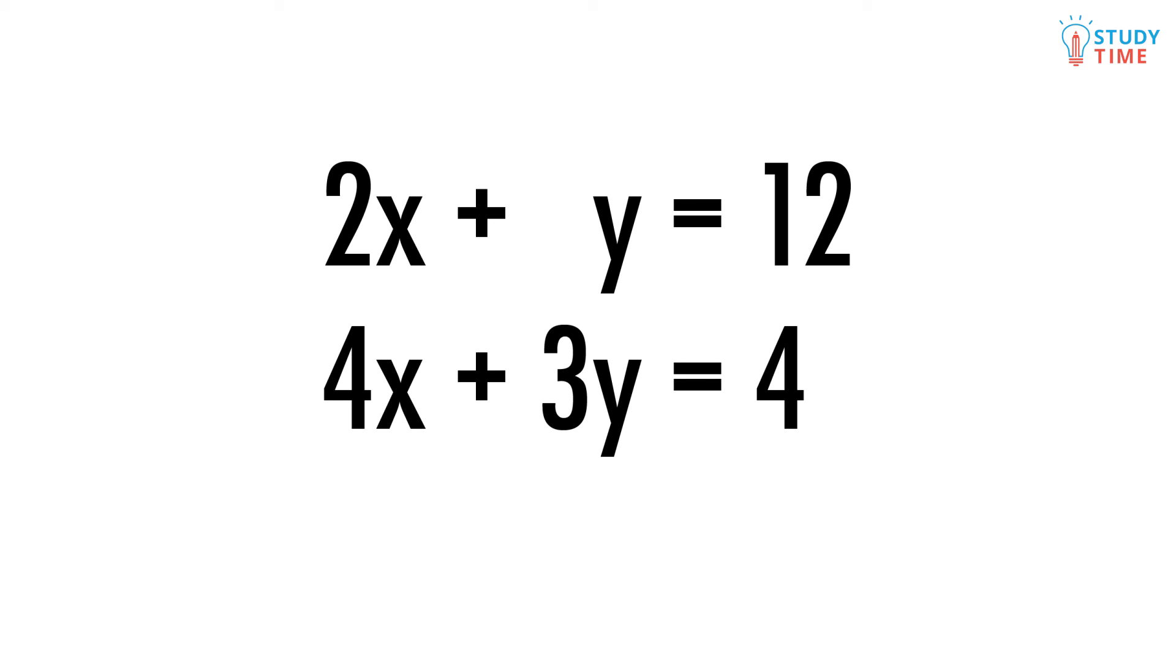The first method is called elimination. We're going to subtract one equation from another so that we get rid of the x variable and have only y left. Then when we solve for y we can plug it back in and find x. Let's try it.